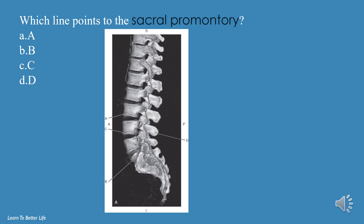Which line points to the sacral promontory? A, B, C, or D? The answer is B. Which line points to the body of L3? A, B, C, or D? The answer is A.